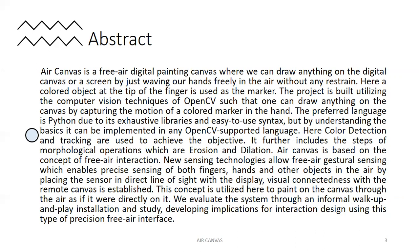New sensing technologies allow free AIR gestural sensing, which enables precise sensing of both fingers, hands and other objects in the air by placing the sensor directly in a line of sight with the display. Visual connectedness with the remote canvas or the screen is established. This concept is utilized here in our proposed project to paint on the canvas through the air as if it were directly on it. We evaluate the whole system through an informal workup and play installation, studying developing implications for interaction design using this type of precision free AIR interface.